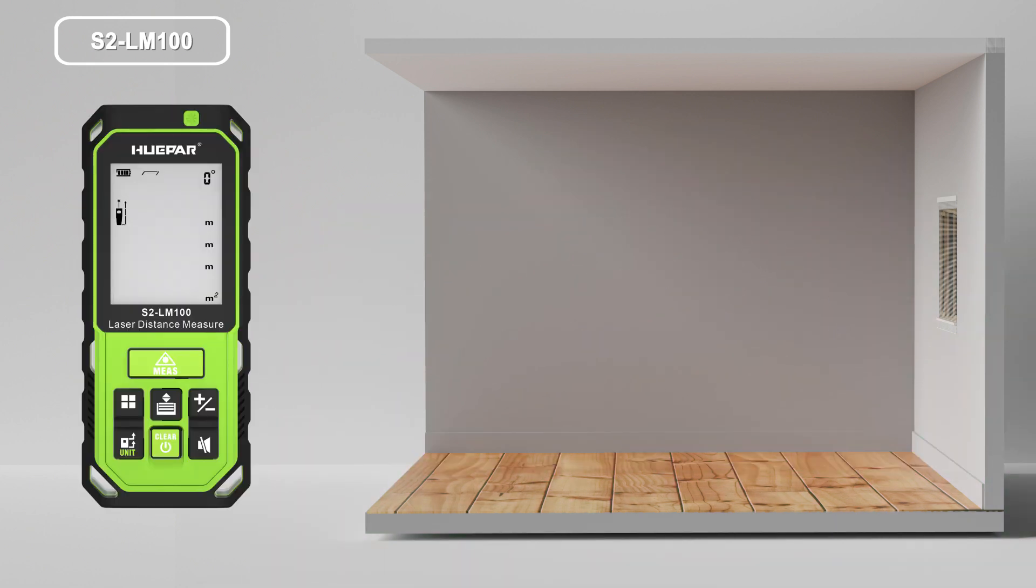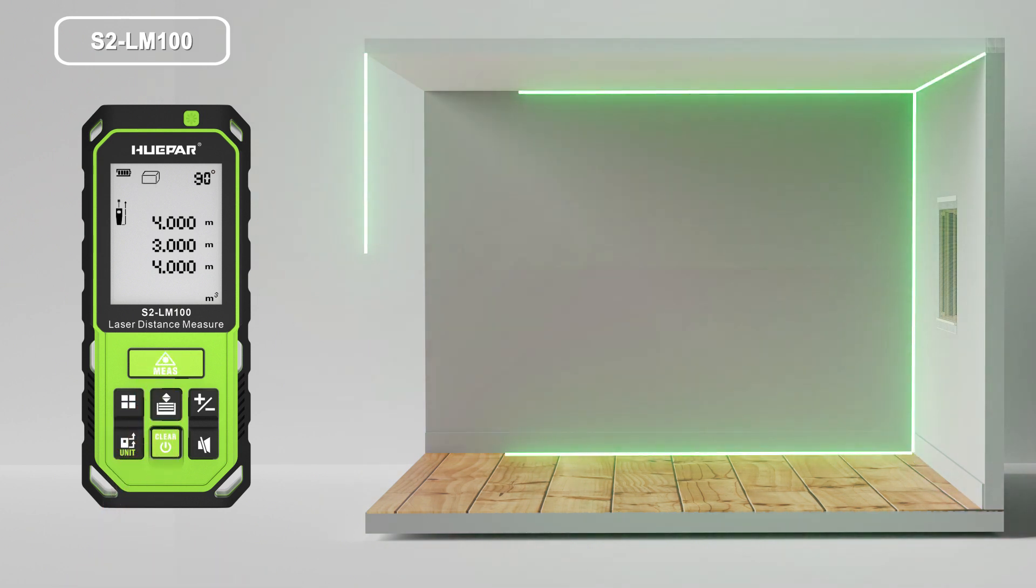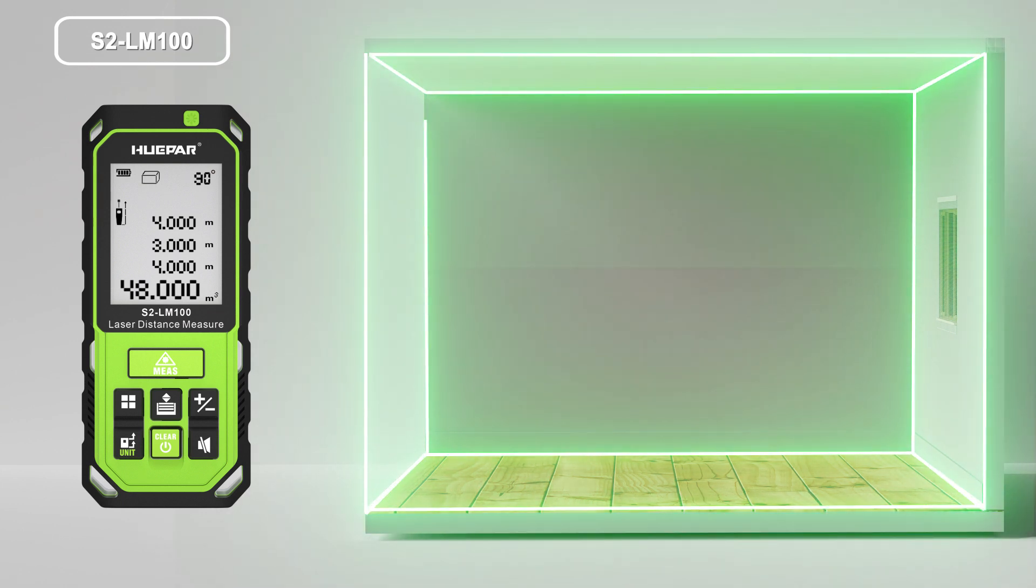Volume measurement. Press the bottom twice. The symbol appears in the function field on the display. Please follow the below instructions for area measuring. Press the bottom once for length, press the bottom again for width, and press again for height.